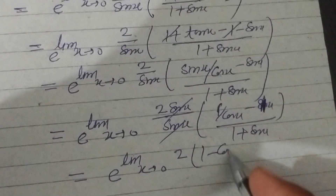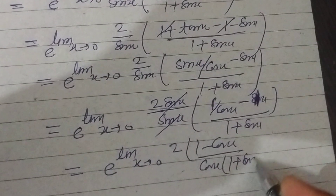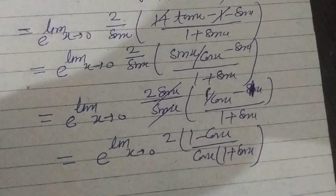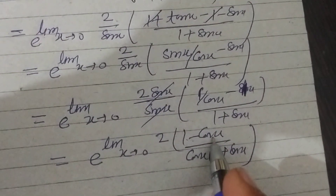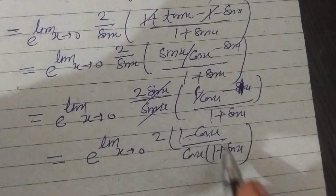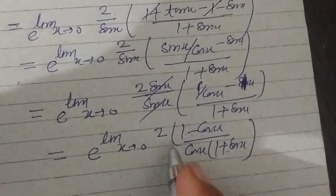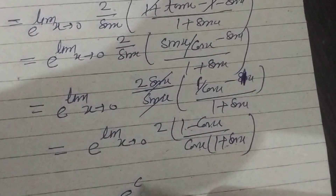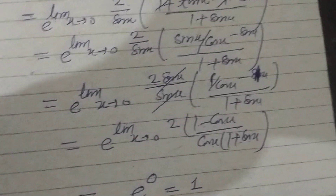We get e to the power limit x tends to 0, 2 times (1 - cos x) over cos x into (1 + sin x). Now applying the limit: 1 - cos 0 = 0, cos 0 = 1, and 1 + sin 0 = 1, so the value is 0. Therefore e to the power 0 equals 1, and the answer is option b.